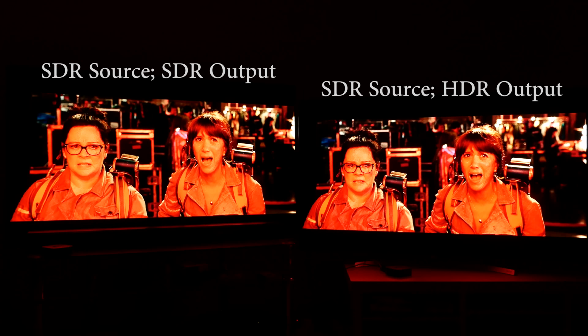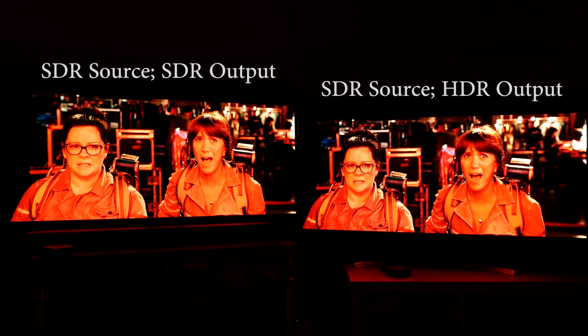This is a scene from the 2016 reboot of Ghostbusters. This movie on iTunes is originally in HD and SDR — standard dynamic range — but on the screen on the right, the Apple TV 4K box is converting to Dolby Vision, which is HDR. You can see some quite nice HDR effects: the lights are much brighter, there's a glint in her eyes, and the background lights have a much punchier HDR effect.